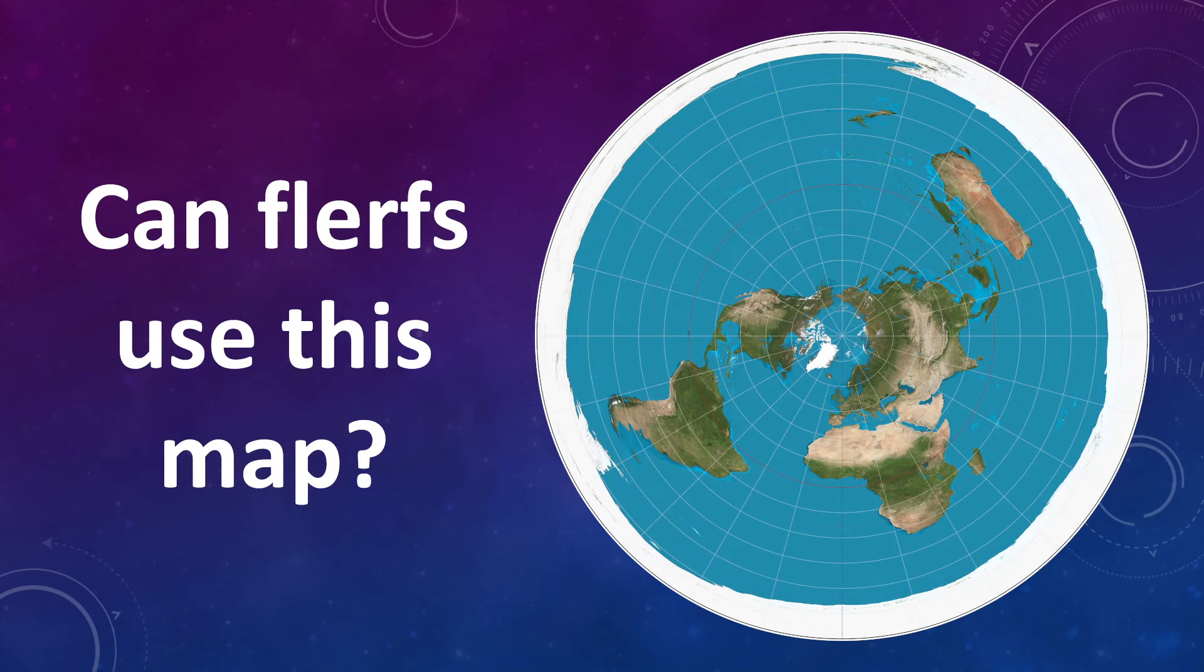But Brian is a little unhappy about this challenge because MC Toon is apparently not allowing FLIRFs to use the only map that FLIRFs have ever seriously put forward as a map of the Earth, and it's this one, the Azimuthal equidistant map.